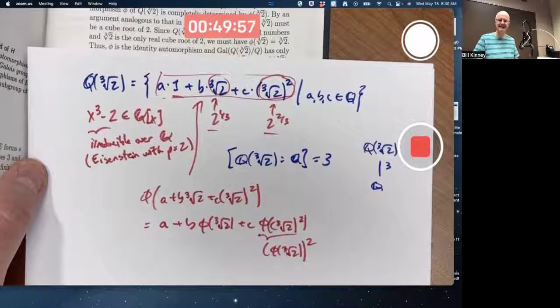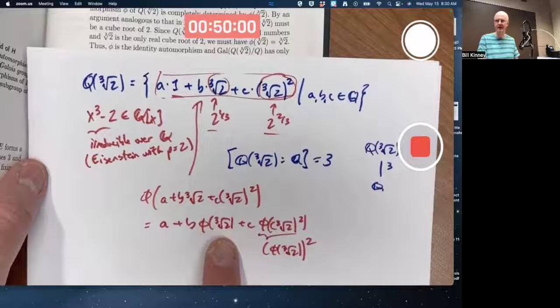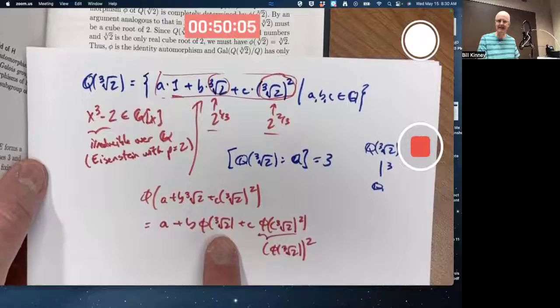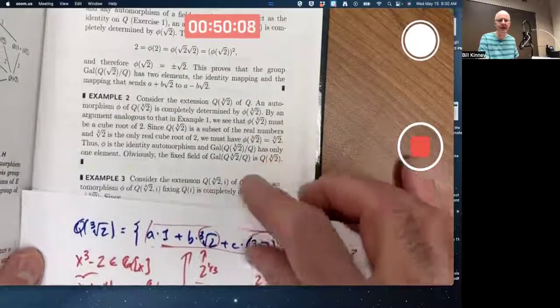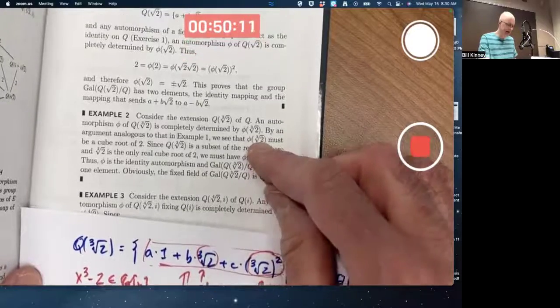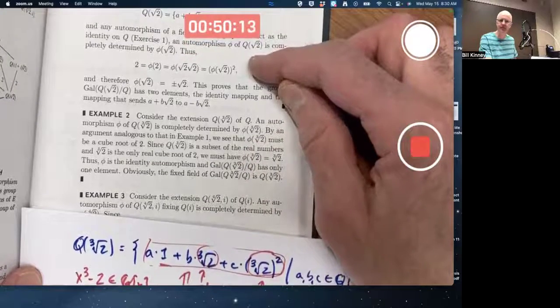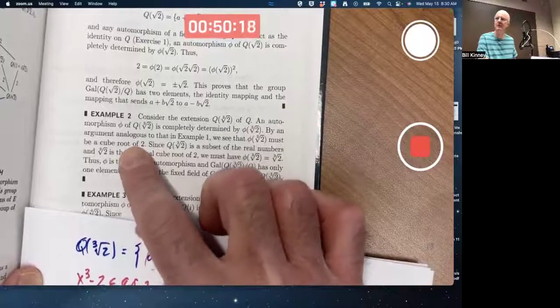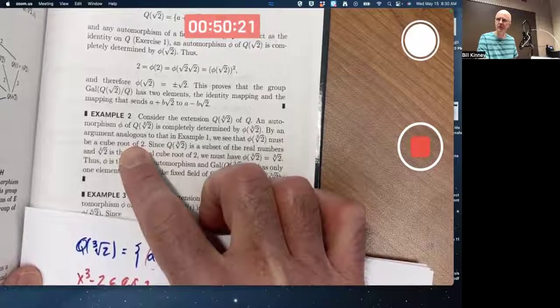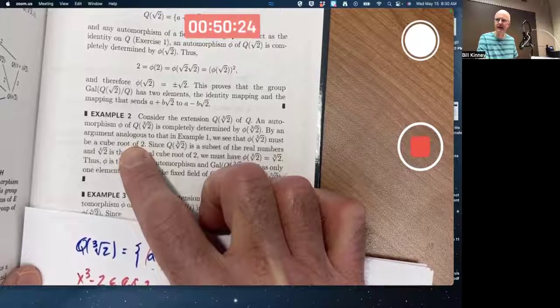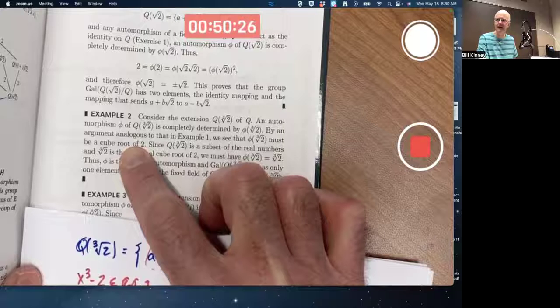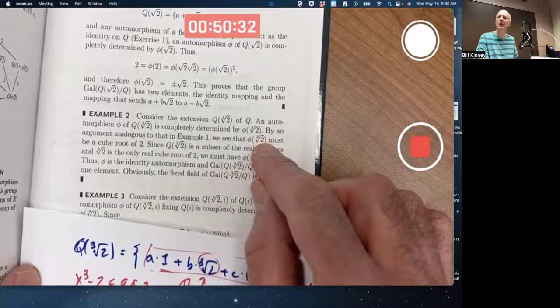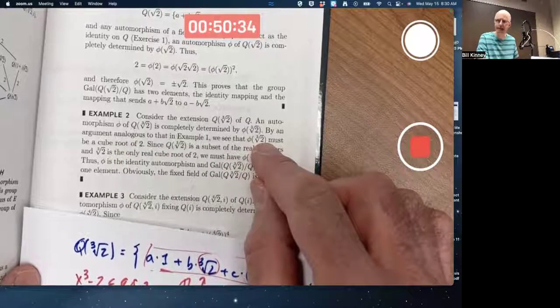But you really don't have much choice in what phi of cube root of 2 is. By an argument analogous to this in example one, phi of cube root of 2 must be a cube root of 2. What? Plus or minus cube root of 2? No, there is no such thing. The cube root of 2, this symbol cube root of 2 is the unique real number whose cube is 2. And it's positive, not negative.